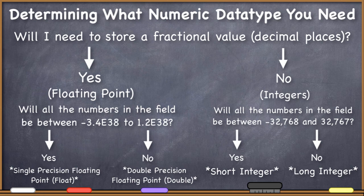So some of you may be wondering why you need to be concerned about all of this. After all, a long integer can store everything a short integer can plus some, so why not just always declare a long integer data type for a field that you're creating whenever you need to store a number? Likewise, if you need fractional values, why not just always use the double precision floating point field type?